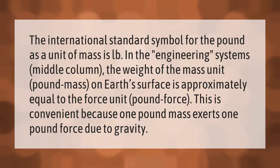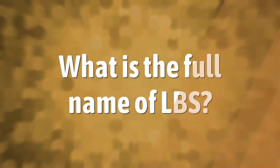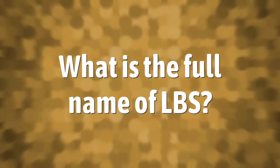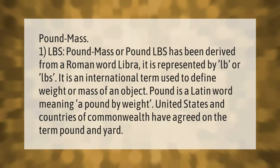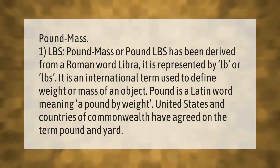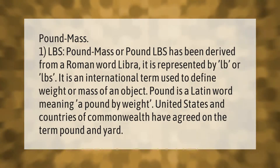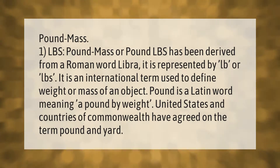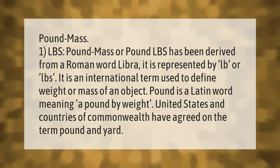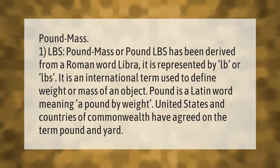Pound-mass, or lbs, has been derived from the Roman word libra. It is represented by lb or lbs, and is an international term used to define weight or mass of an object. Pound is a Latin word meaning a pound by weight. The United States and countries of the Commonwealth have agreed on the term pound and yard.